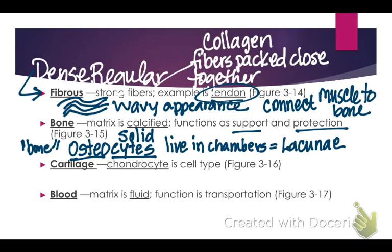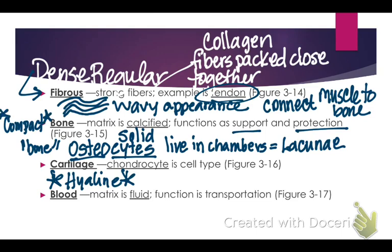For cartilage, we're going to focus on hyaline cartilage — that's what I'm going to test you on. We'll also look at compact bone specifically. Hyaline cartilage is found at the ends of bones for protection. Cartilage is also found in the tip of your nose and in your ears, but specifically hyaline cartilage is at the ends of your bones.